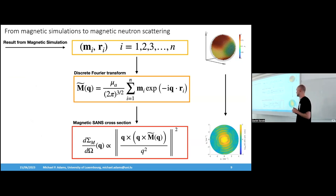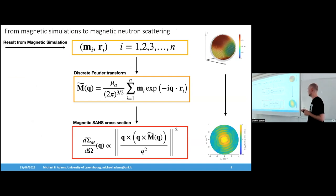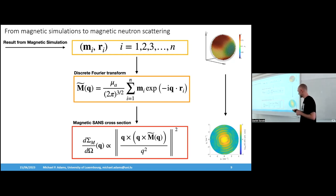Then the equations for the Fourier transform — this is a standard formulation. You take the magnetization vectors and position data from your simulations and sum them up in the discrete Fourier transform. Finally, you calculate the scattering cross section, which can be seen like a magnetic Fourier energy density: if you take the volume integral over this expression you get the magnetic energy in Q-space. This quantity — the scattering cross section — is what we measure in small-angle neutron scattering experiments.